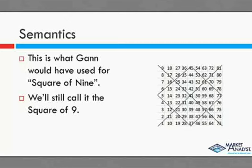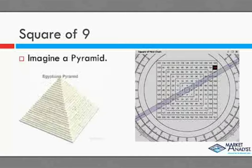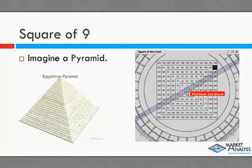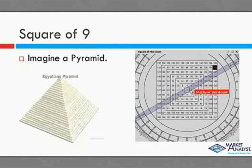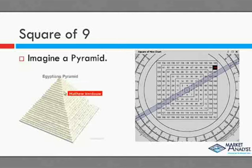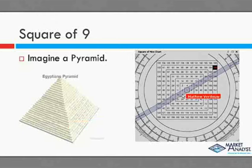The traditional Square of Nine starts with one in the middle and we go around clockwise, with increasing numbers: two, three, four, five, around to nine, then we progress into the next level and go around again. The best way to imagine it is like a pyramid where we have one at the top, then the next series of numbers going down — and it's like we have a bird's eye view of the pyramid as we look at it.